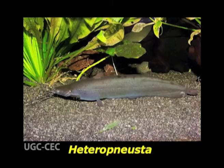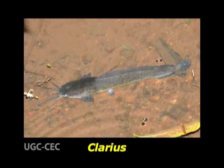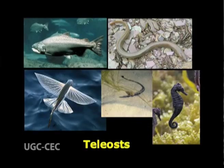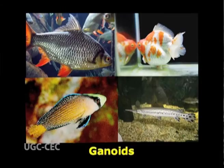Branchial diverticula: the outgrowths from the gill chamber form more complicated aerial accessory respiratory organs. Examples are Heteropneustes, Anabas, Clarias, etc. Air bladder: the swim bladder of teleosts is essentially a hydrostatic organ, but in lower bony fishes — dipnoans and ganoids — the air bladder acts like a lung to breathe air, and is truly an accessory respiratory organ. The wall of the bladder is vascular and circulated with alveoli.